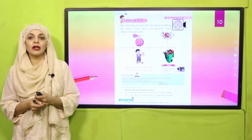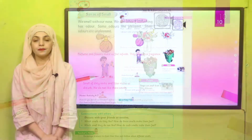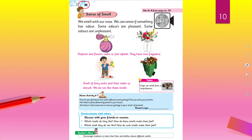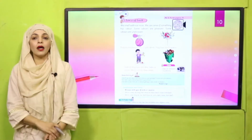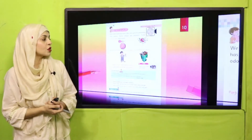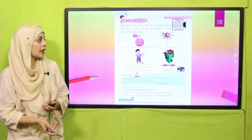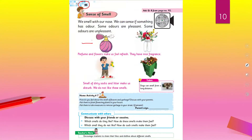Okay my dear students, now quickly open page number 88 in your books. Pause the video and open the page. I hope everybody has opened page number 88. So my dear students, quickly look at the first picture. This is a perfume. On page number 88, this picture shows a perfume. So quickly tell me, how does the perfume smell?